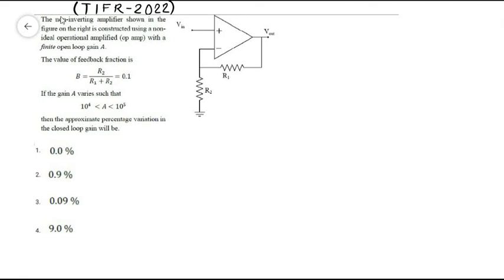This question was asked in TIFR 2022 physics paper. It shows an inverting amplifier with finite open loop gain, so the virtual ground concept will not be applicable here.